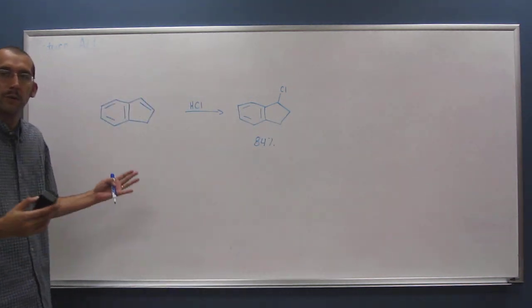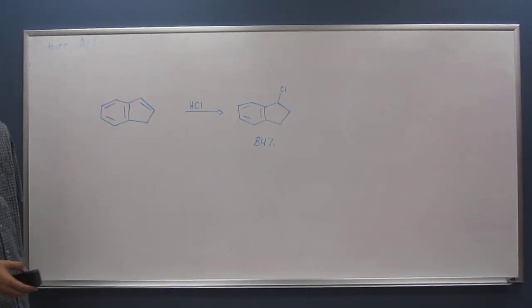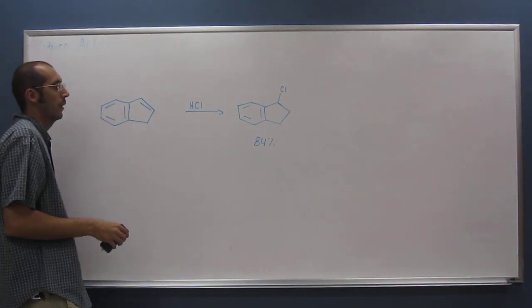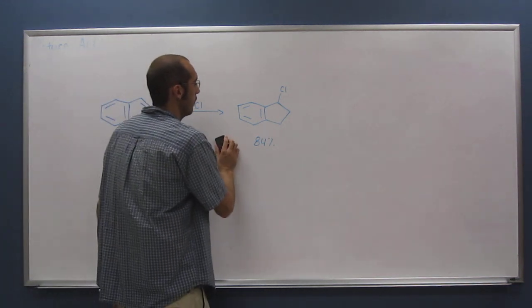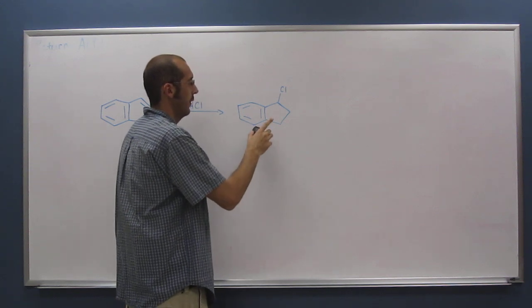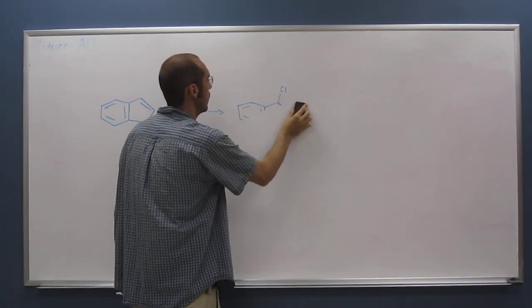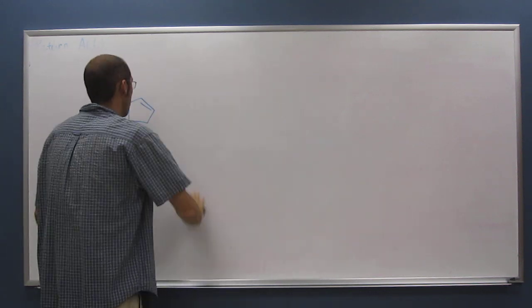But you would have expected before we did this, when you only knew about electrophilic additions without the benzene ring next door to it, you might expect that you would have a 50-50 mixture of the chlorines being on either of those two carbons. But anyways, let's go over this electrophilic addition.